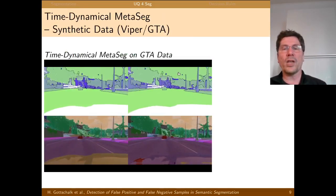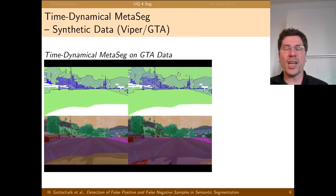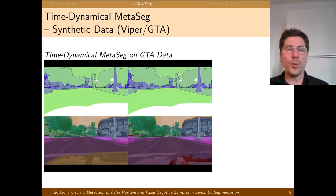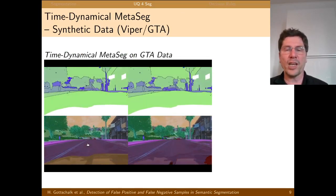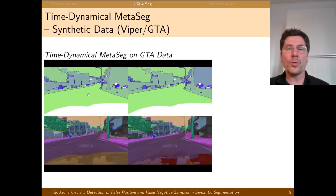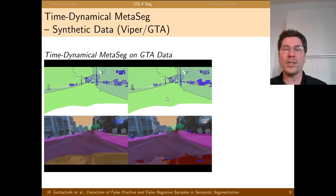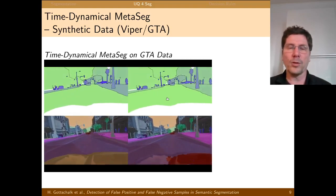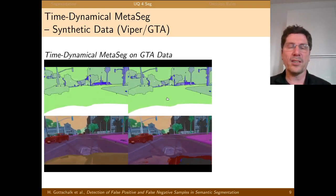And we can also do that on video data like GTA data, where we have a fully annotated ground truth available. And again by the similarity of the true quality and the predicted quality, you get a pretty good coincidence of the both.